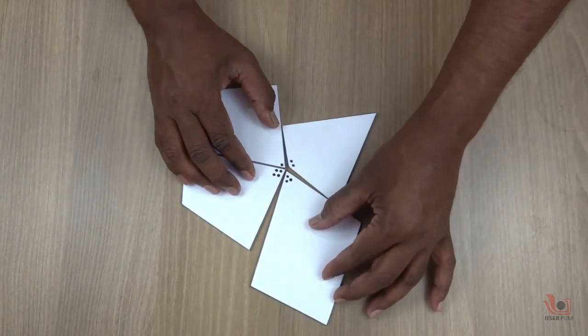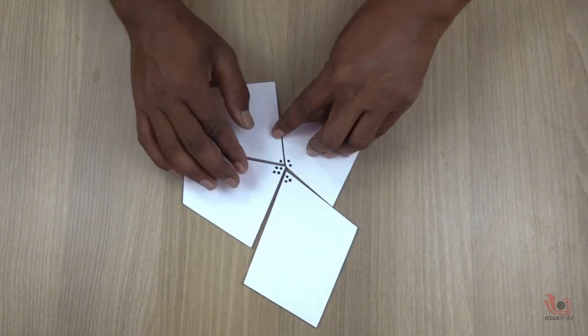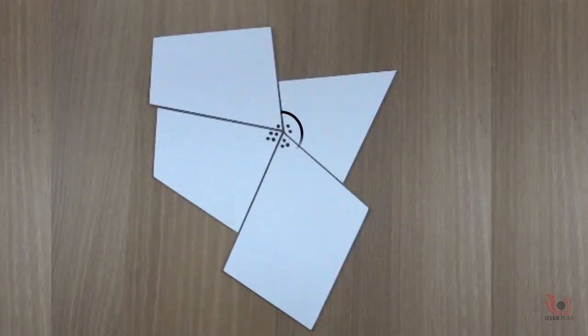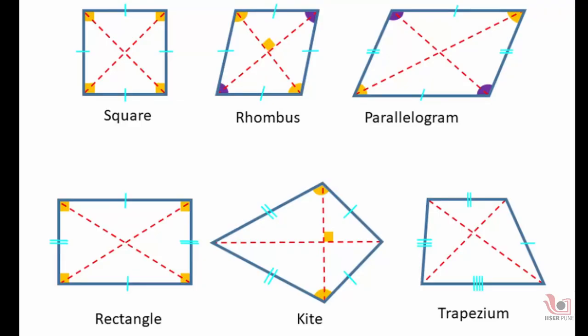Here we have used one type of quadrilateral but you can try it with different quadrilaterals like trapezium, parallelogram, rectangle, rhombus, square and kite.